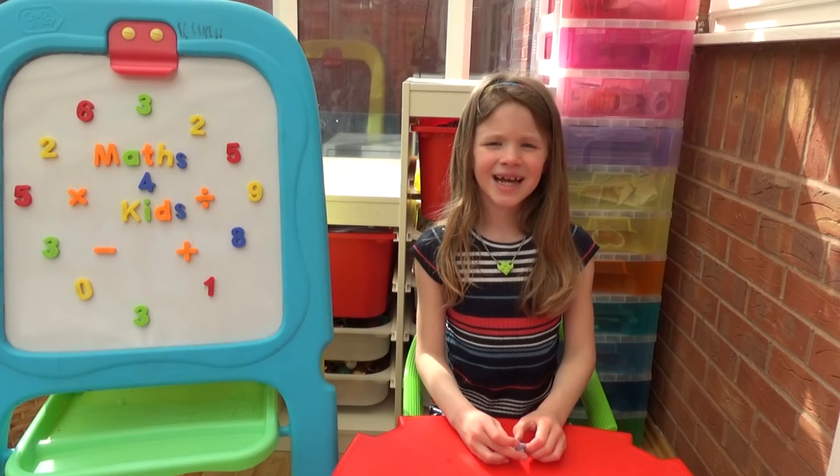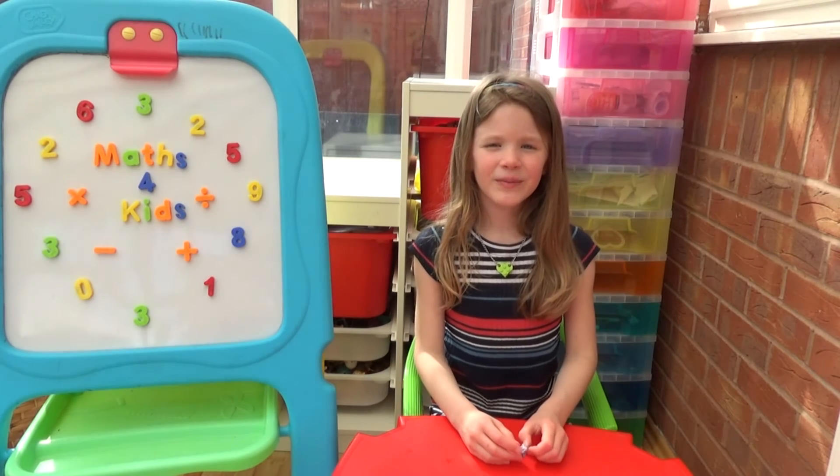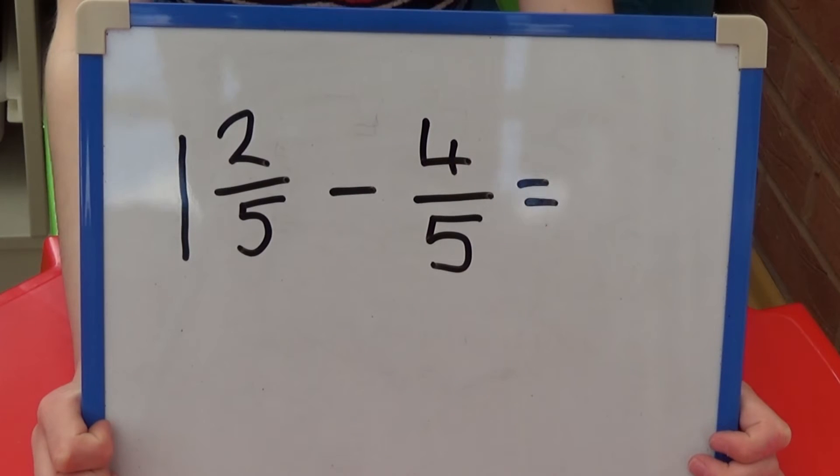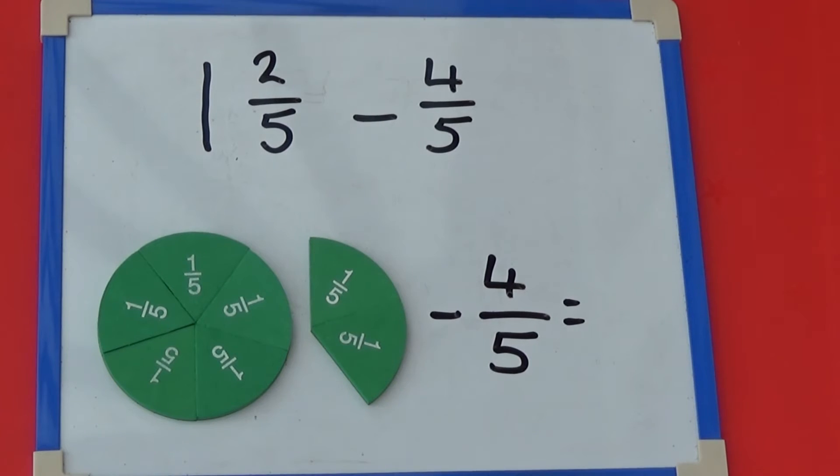This time we're going to look at what happens when the first fraction is more than one whole. We're going to work out one and two fifths take away four fifths. As the denominator is five, we're going to use our fraction circles which are split into fifths or five equal parts.